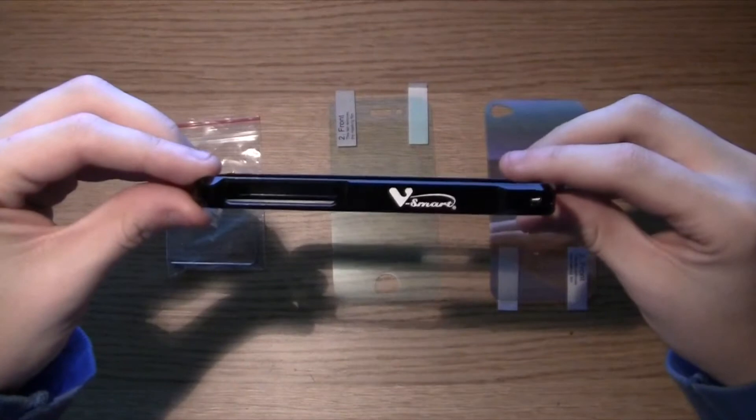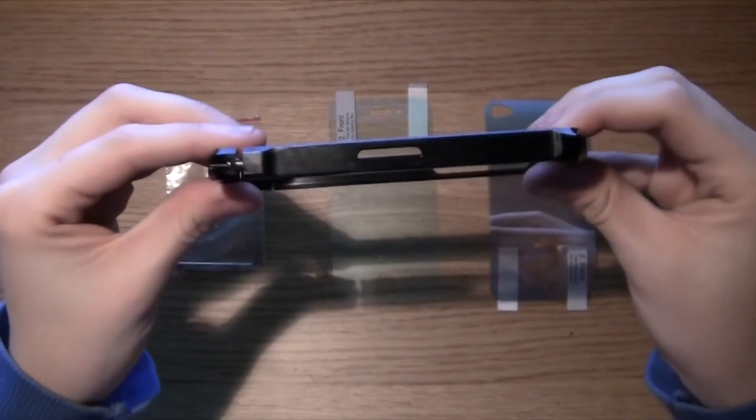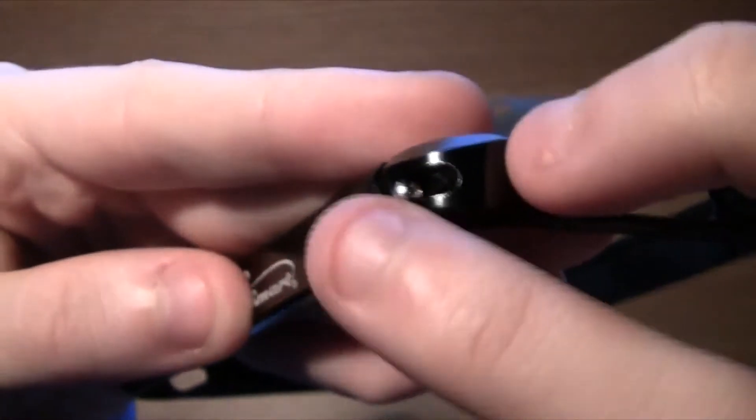Ok, this is what it looks like when it's out of the packaging. As you can see there I went for the black bumper. They do have a few other colours like blue, red, gold and a couple of other ones.